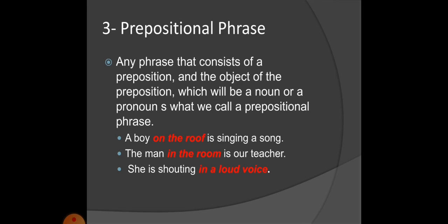A prepositional phrase consists of a preposition and the object of the preposition, which will be a noun or a pronoun. For example: 'A boy on the roof is singing a song' — 'on the roof' is the prepositional phrase. 'The man in the room is our teacher' — 'in the room' is a prepositional phrase. 'She is shouting in a loud voice' — 'in a loud voice' is a prepositional phrase.